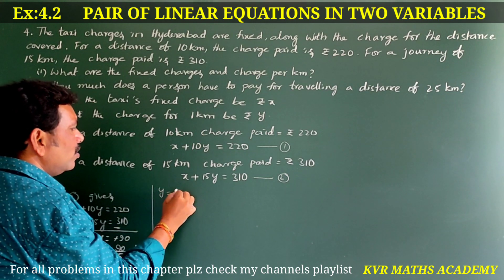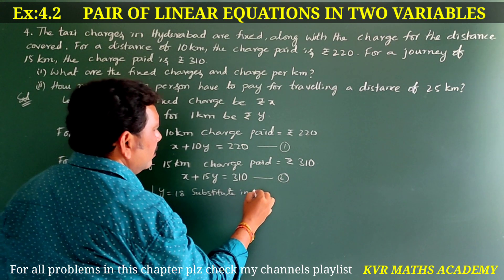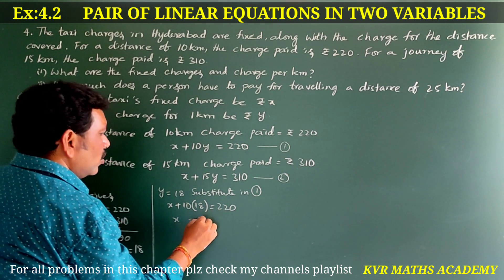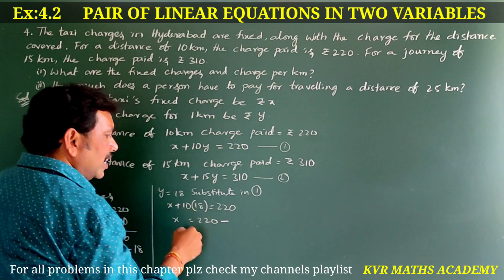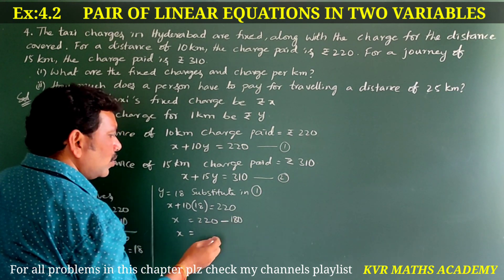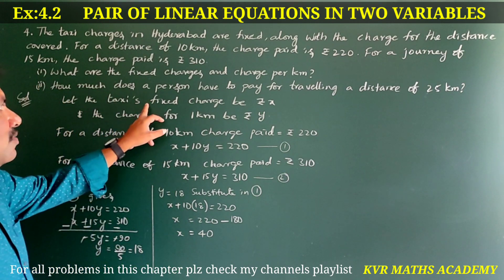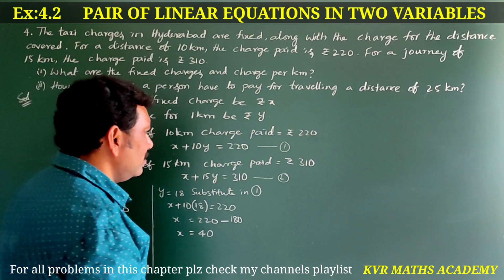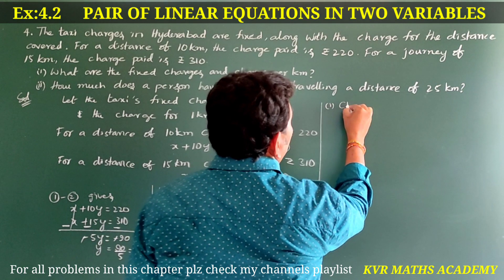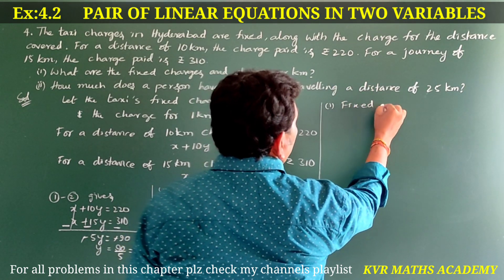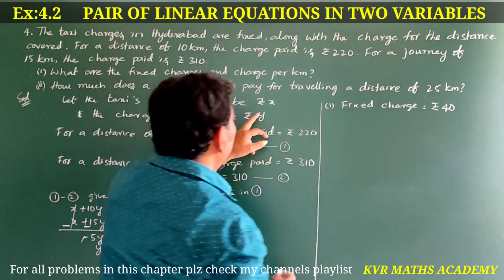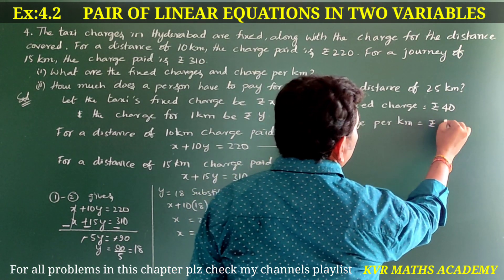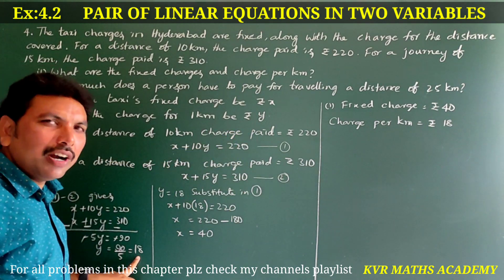Substituting y equals 18 in equation number one: x plus 10 into 18 equals 220. That gives x plus 180 equals 220, so x equals 220 minus 180, which is 40. Fixed charge is 40 rupees. So the fixed charge is rupees 40 and the charge per kilometer is rupees 18.